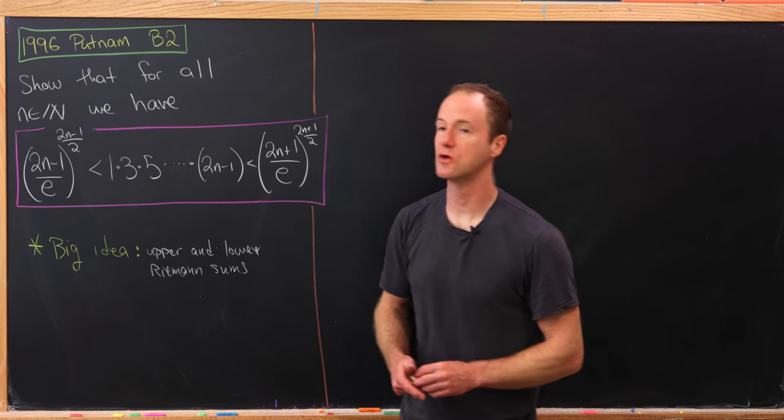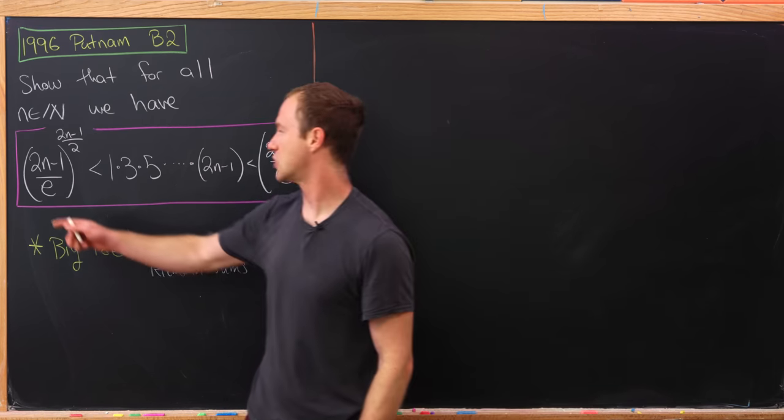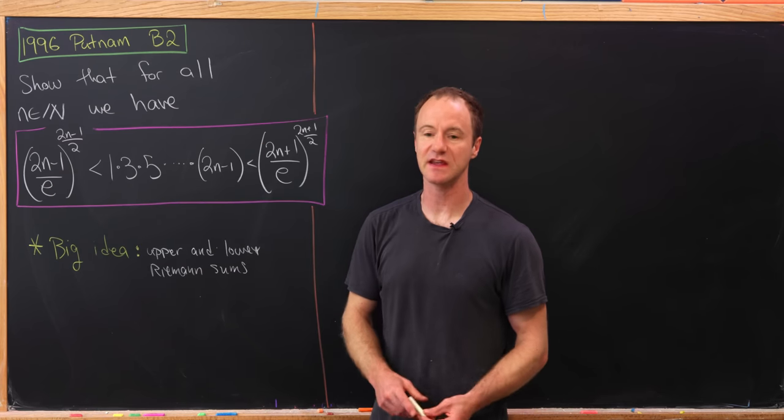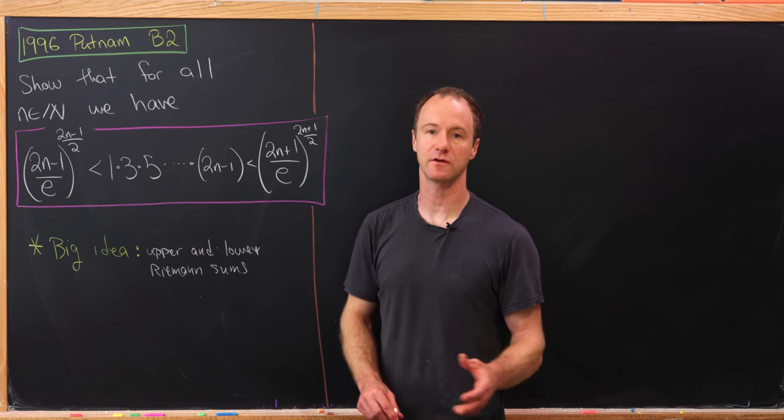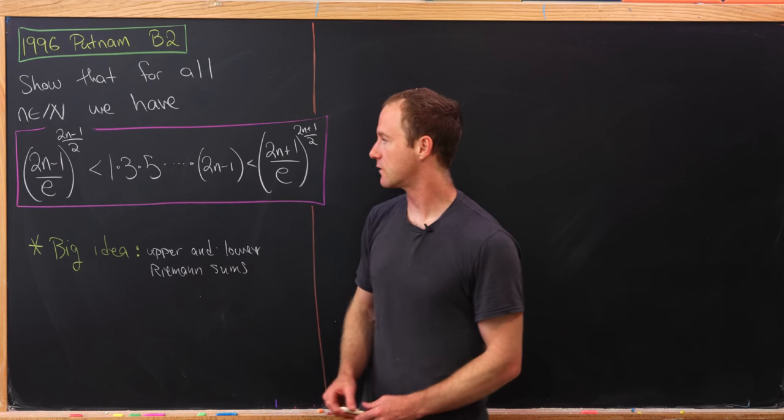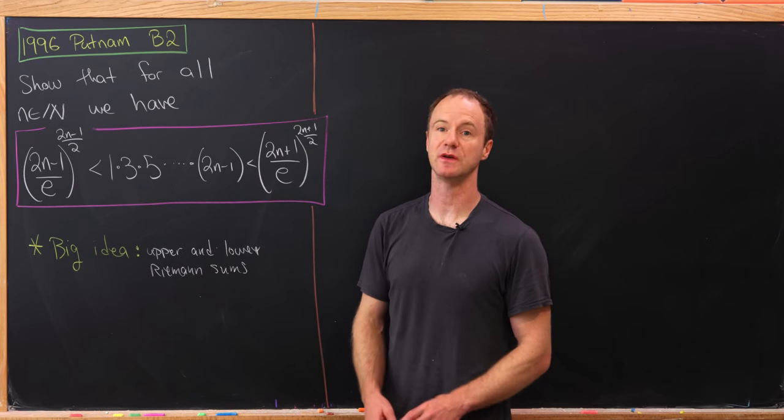We'd like to show for all natural numbers n, the following inequality holds. So on the left, we have 2 to the n minus 1 over e raised to the 2 to the n minus 1 over 2. Then in the middle, we have this product of odd numbers, 1 times 3 times 5 up to 2n minus 1.